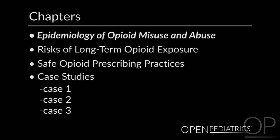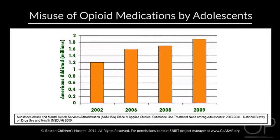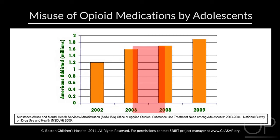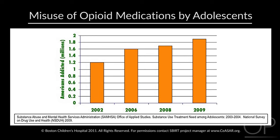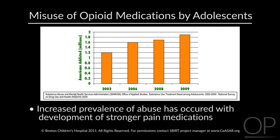Epidemiology of Opioid Misuse and Abuse. This slide shows data from the Substance Abuse and Mental Health Services Administration. Data was collected between 2002 and 2009, and it shows trends in misuse of opioid medication among adolescents. There has been a significant increase in the number of adolescents who misused opioids between 2002 and 2009, and these numbers continue to grow, in conjunction with the development of newer and stronger pain medications.